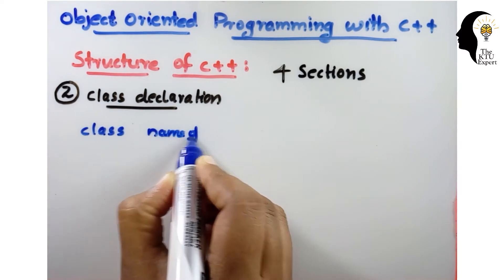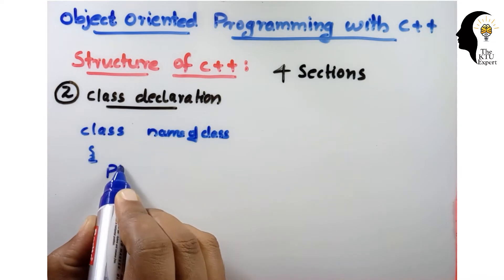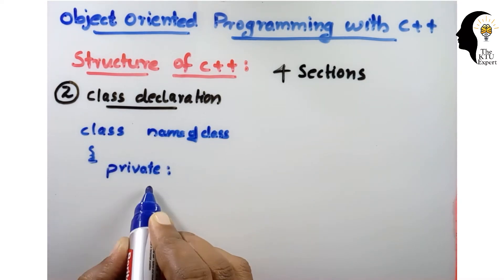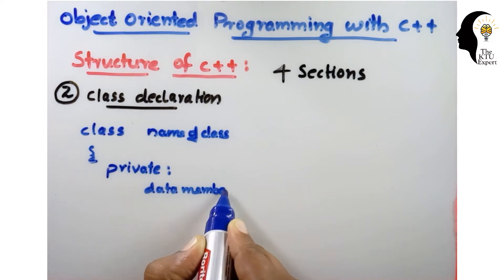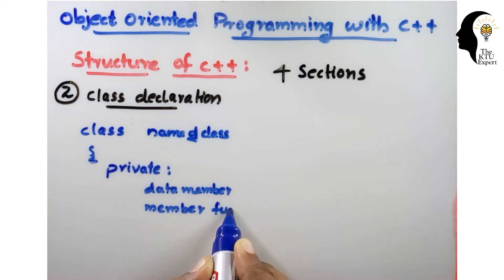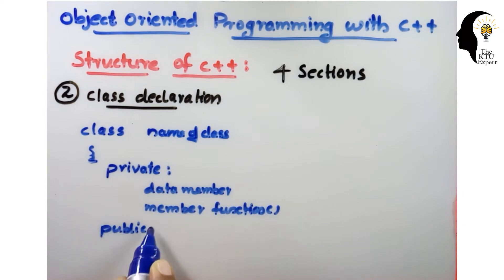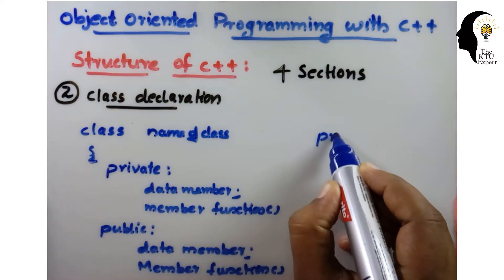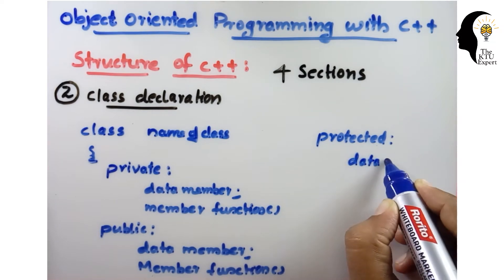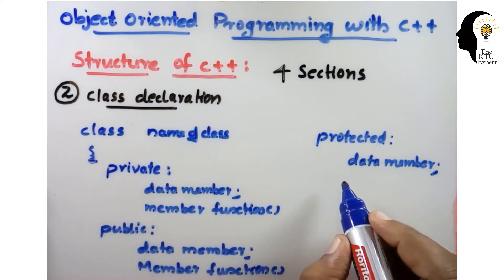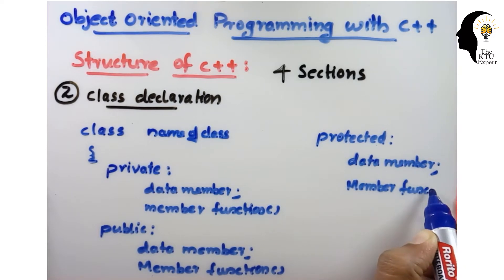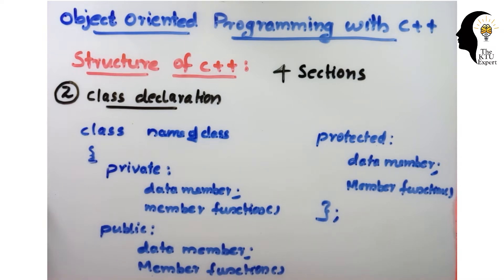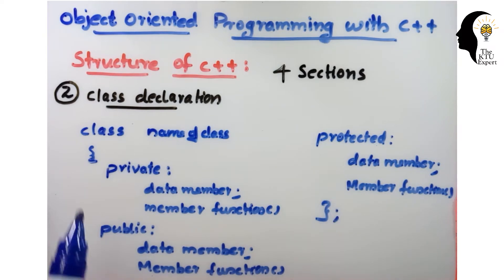Inside the class, we write the access specifiers. Private contains data members and member functions. Public also contains data members and member functions. Protected also contains data members and member functions. After that, we close the class with a semicolon. There are three access specifiers: private, public, and protected.